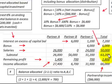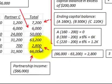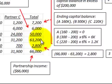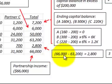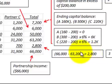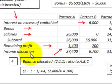That $63,200 is an important number because next we have to calculate the remaining profit to be allocated. The partnership income was $66,000 for the year. We've allocated $63,200 of that, so the difference — the remaining profit — is $66,000 less $63,200, which gives us $2,800 that still has to be allocated between the partners.